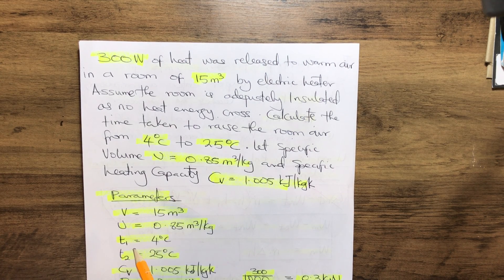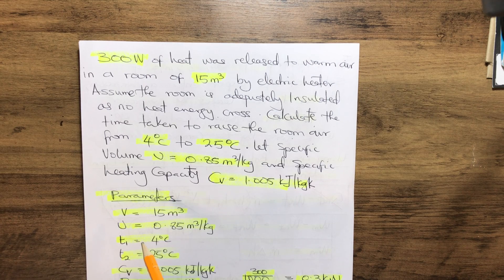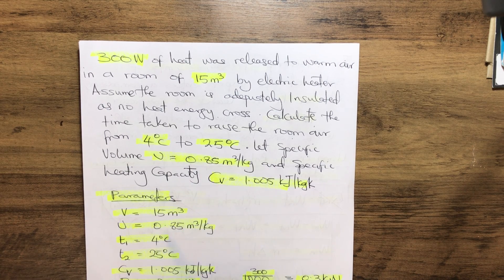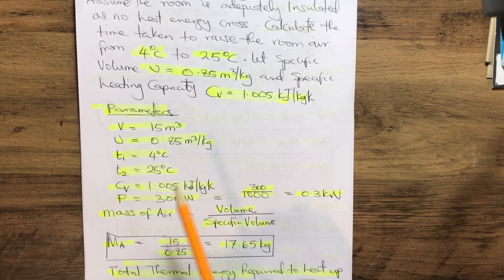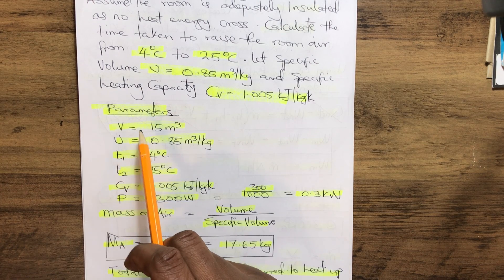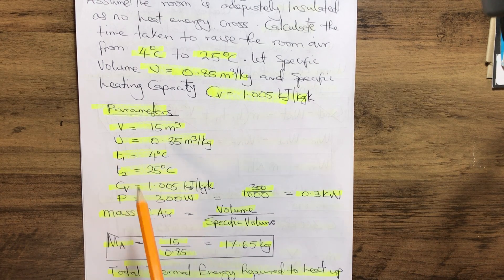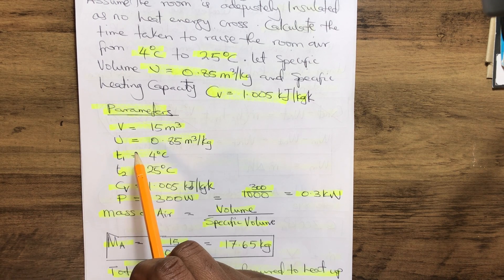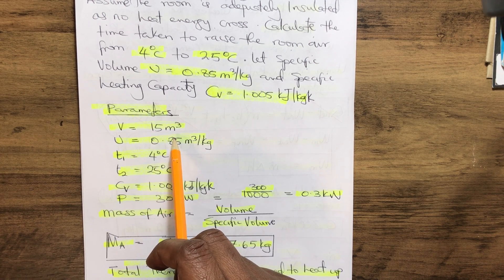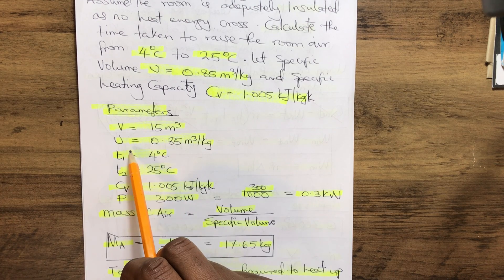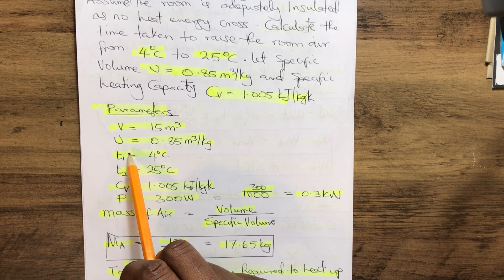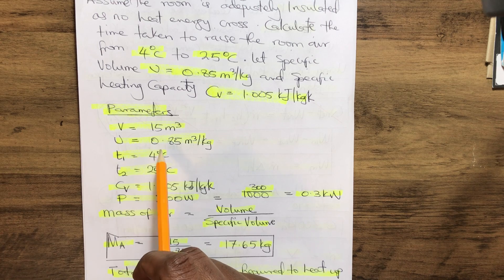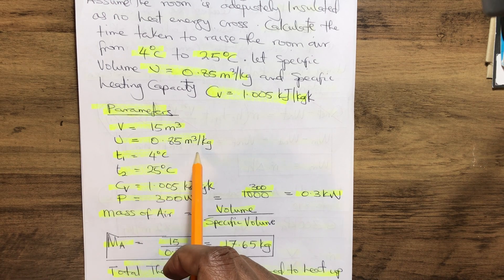Now let's pull out all the parameters from this question. We have our volume of air in the room which is 15 meter cube, and our specific volume ε which is 0.85 meter cube per kilogram.